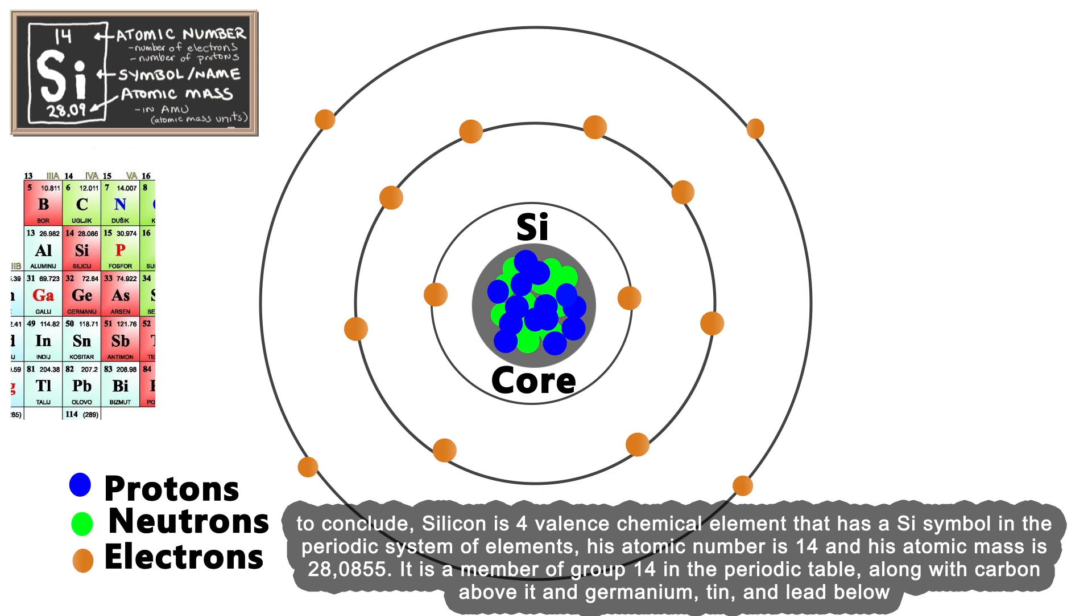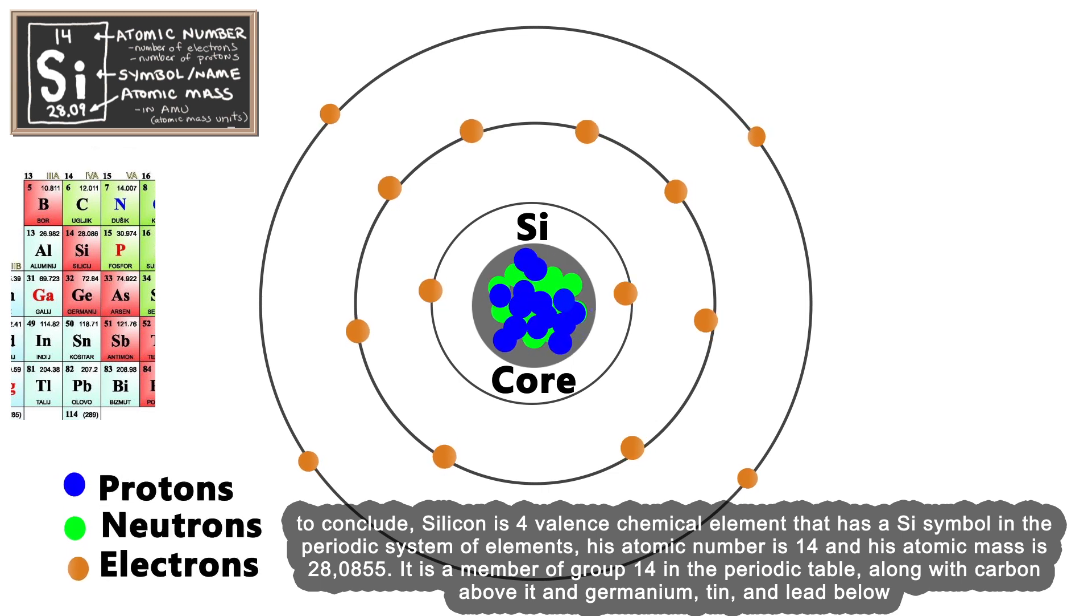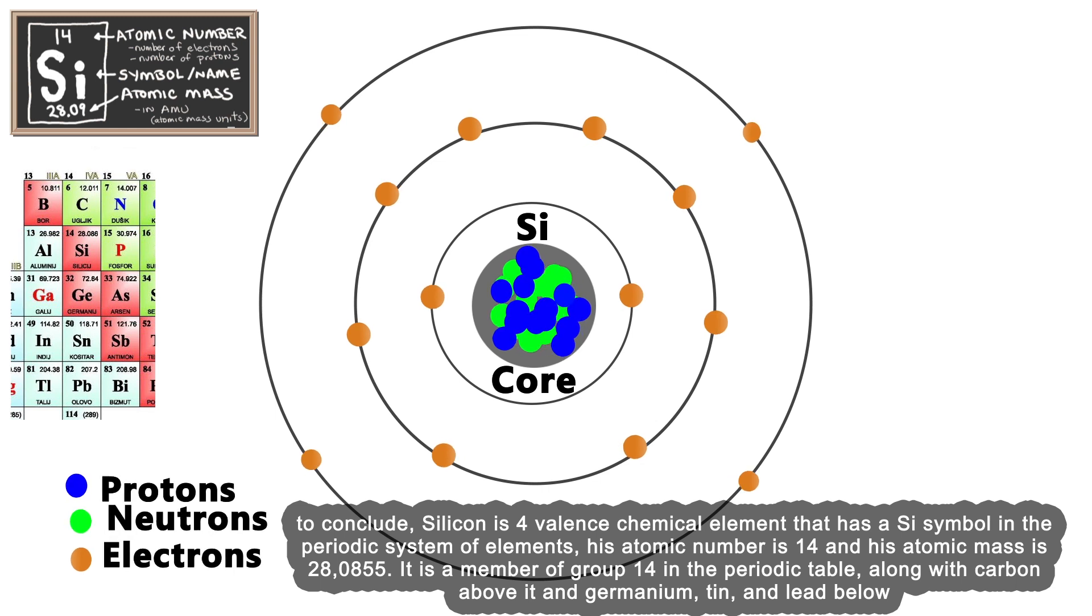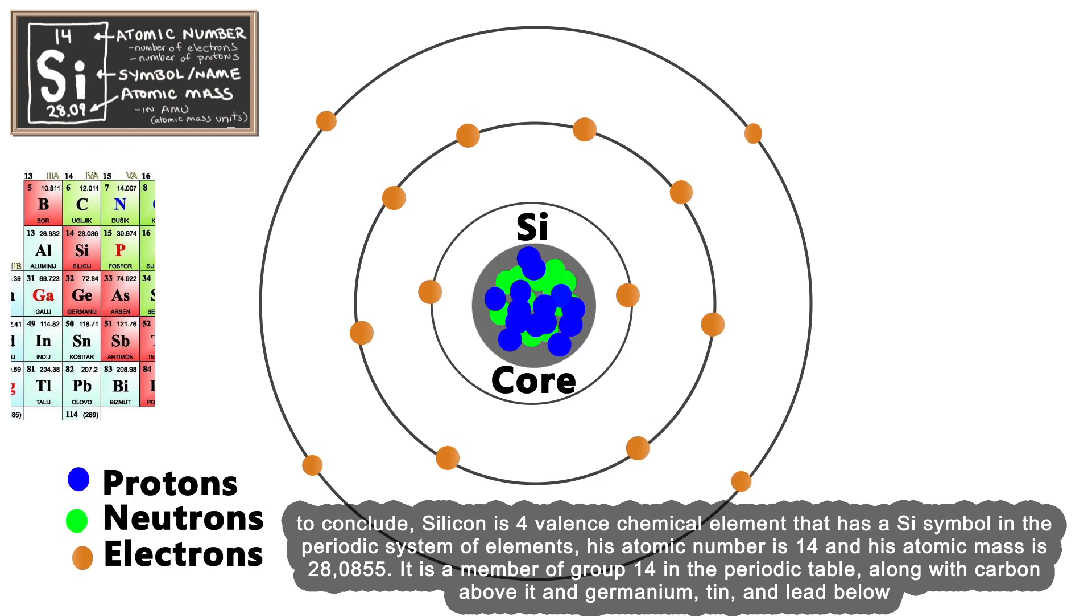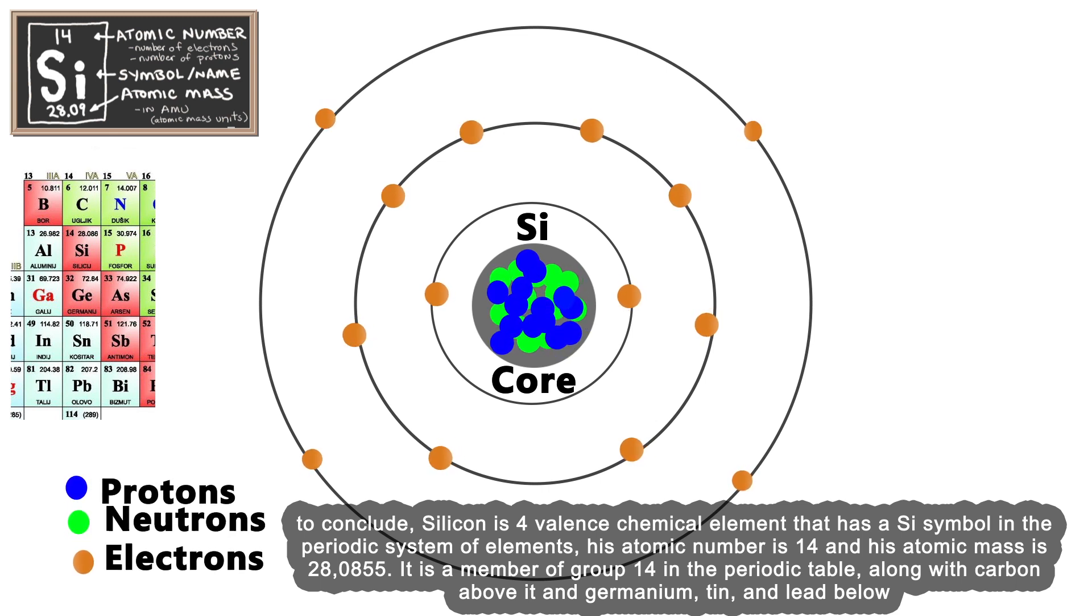Silicon has the Si symbol in the periodic system of elements. Its atomic number is 14 and its atomic mass is 28.0855. It is a member of group 14 in the periodic table, along with carbon above it and germanium, tin, and lead below.